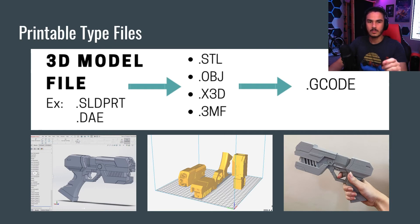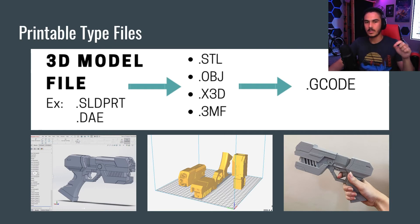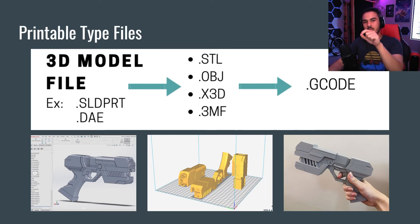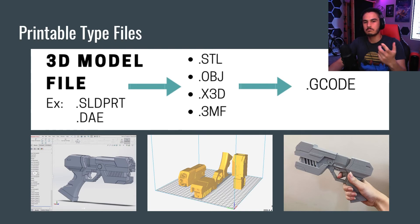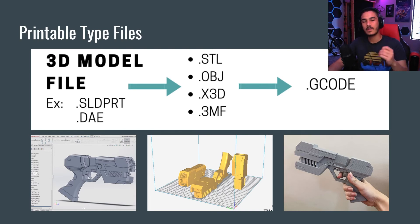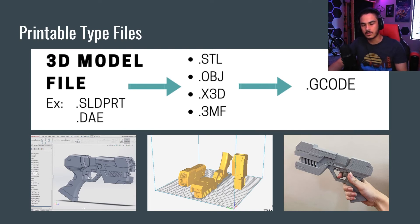It's called Slice because it literally slices the model to ribbons and converts it into G-code. It basically writes down everything the 3D printer needs to do — like Move X 10 points, Move Y 10 millimeters, draw a circle. It writes all that code down, and then you give that file to the 3D printer to read.